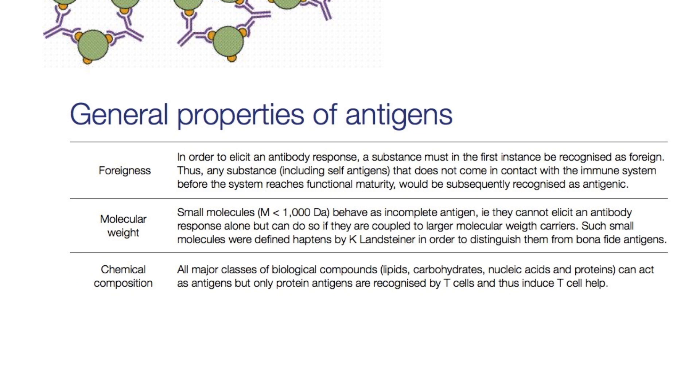Then the third parameter here, chemical composition. Well, almost anything can be an antigen, but some of the cells interact with proteins better. So only down here in the bottom line, only protein antigens are recognized by T cells. And thus induce T cell help. So you should know that almost anything can be an antigen, even lipid, carbohydrate, nucleic acids, whatever, proteins. But then the T cells really like to interact with protein antigens.